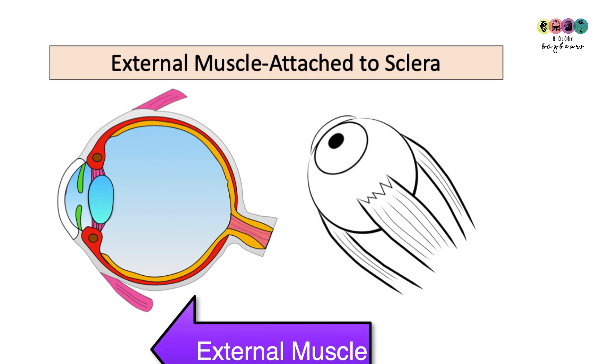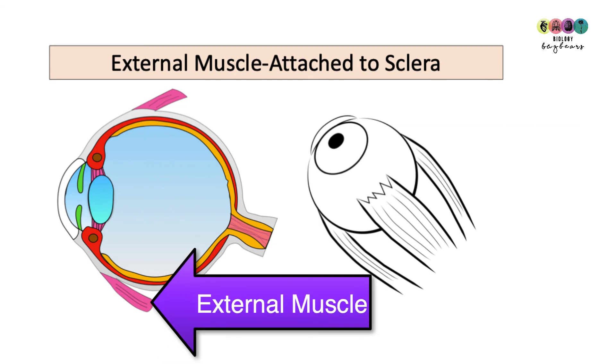There are many muscles that are attached to the outside of your eye. They attach to the sclera and these are involved in moving the eyeball around.